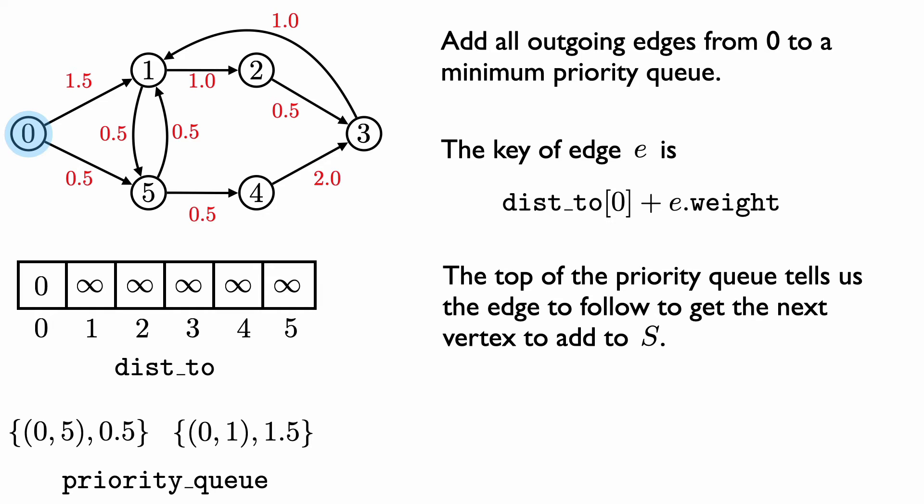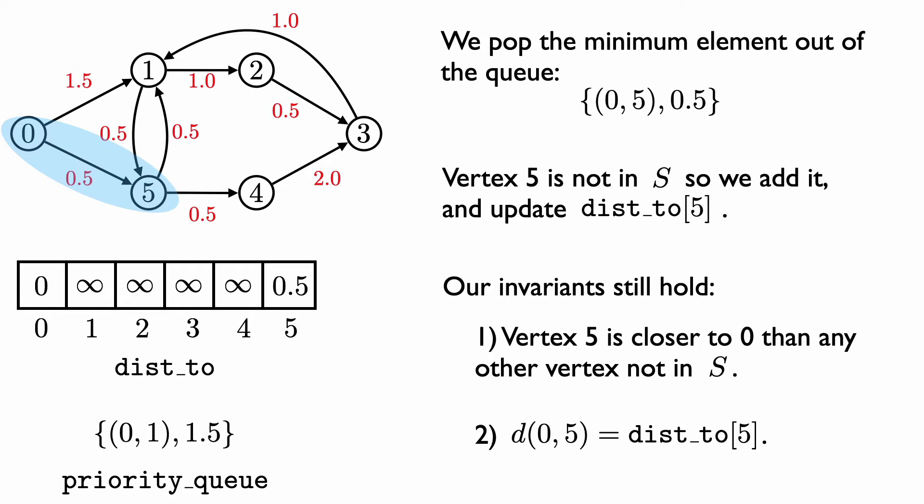The key value associated with an edge is our estimate of the distance of the destination vertex from 0 — that is, dist2 of 0 plus the weight of the edge. Since dist2 of 0 equals 0, the key value is simply the weight of the edge. The priority queue has the two outgoing edges from 0, and the top of the queue has the minimum weight edge leaving vertex 0, which is the edge from vertex 0 to vertex 5. We pop the minimum element out of the priority queue — the edge from 0 to 5. Vertex 5 is not already in S, so we add vertex 5 to the set S, indicated with the blue blob.